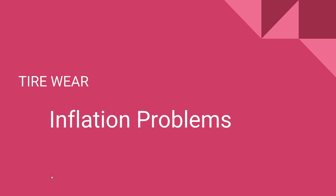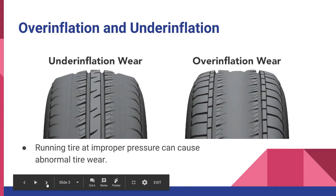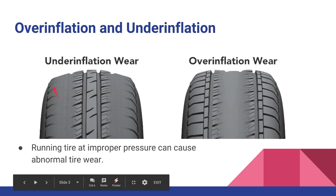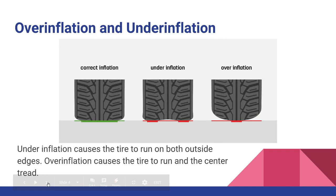The first thing we're going to talk about is inflation problems — issues related to air pressure in the tire. There are two types: under-inflation wear and over-inflation wear. Running a tire at improper pressure causes abnormal wear. Under-inflation wears the outside edges on both sides, while over-inflation wears the center of the tire. This tire shows wear on both inside and outside edges; this one only on the inside edge.